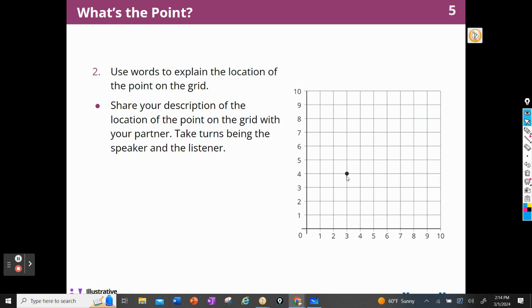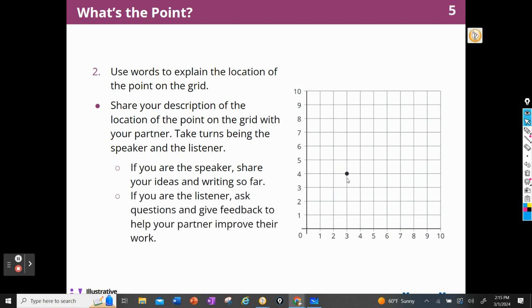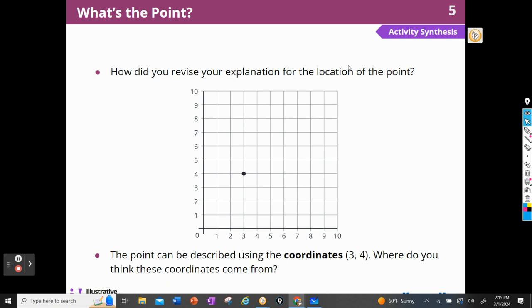Share the description of the location of the point on the grid with your partner. Take turns being the speaker and the listener. If you're the speaker, share your ideas in writing so far. If you're the listener, ask questions and give feedback to your partner to help improve their work. So I could say we start at the 0, go over 3, and go up 4, couldn't I? I think that would be a very accurate description. How would you describe where that point is to a friend? And then you can revise your initial draft after talking to your partner. How did you revise the location, the explanation of your location? So now we're going to do some instruction here.